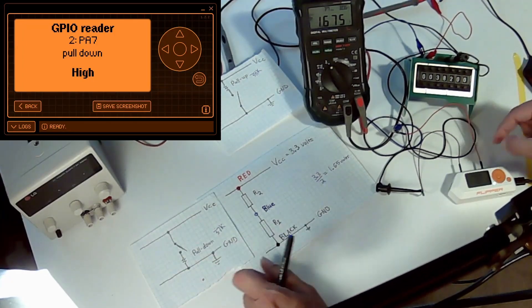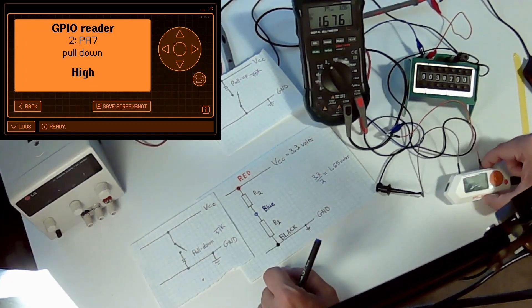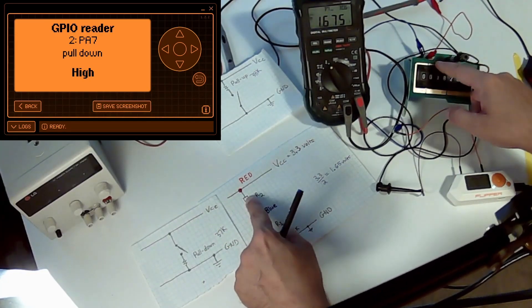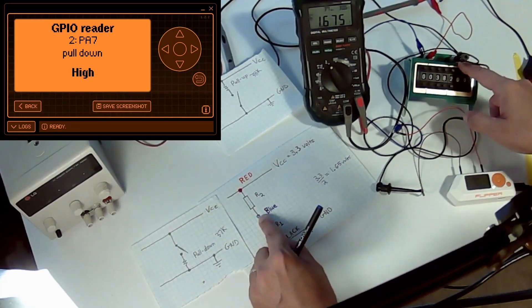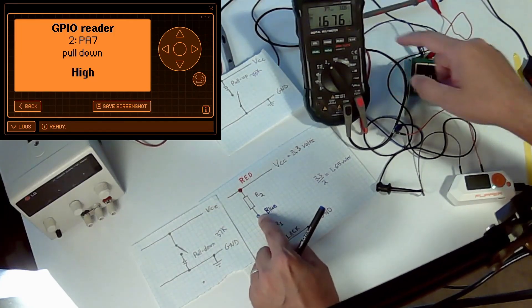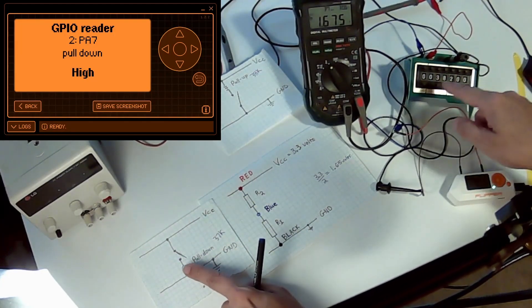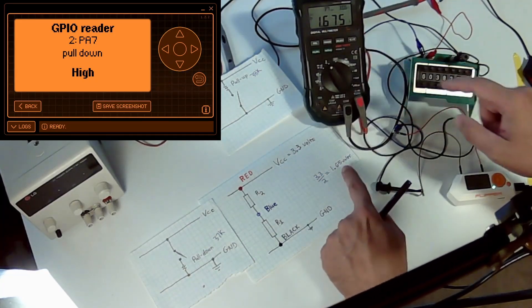So now we're in the pull-down configuration. Our 3.3 volts off the Flipper is going into the top of our resistor. This is R2, and then we are measuring it in the voltmeter, and then this is going into our pull-down resistor. So it looks like we're also at 1.65 volts.